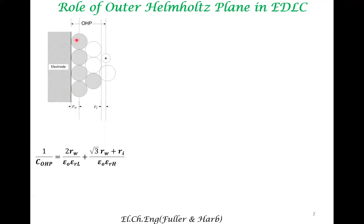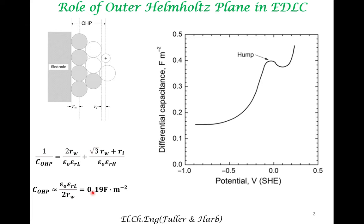In the bulk, the dipolar liquid can freely orient itself. However, solvent molecules adsorbed onto the electrode surface have relatively less orientational degrees of freedom, and therefore their permittivity is lesser. Because the lesser of the two capacitances dominates, we can approximate the outer Helmholtz layer's capacitance via just one term, giving a useful estimate of capacitance.